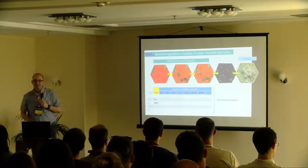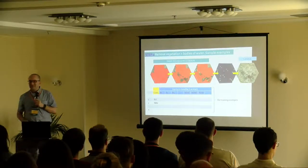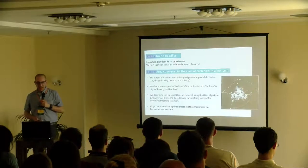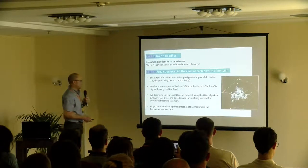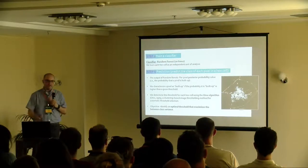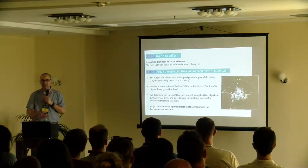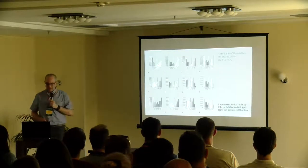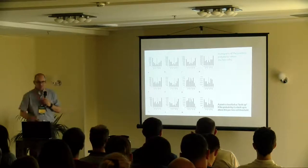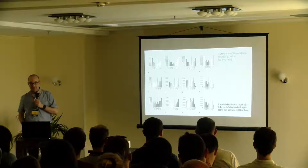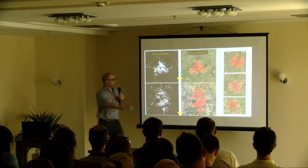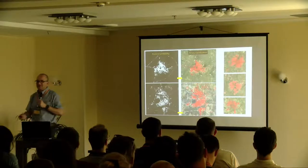Then we train the classifier using random forests. The prediction of random forests is the posterior probability — what is the probability that a pixel is built-up? We then take this posterior probability and convert it into a binary map using the OTSU method, which is a method for image segmentation. Any pixel that exceeded this threshold was labeled as built-up; else, not built-up. Here you can see the posterior probability map and the binary map.